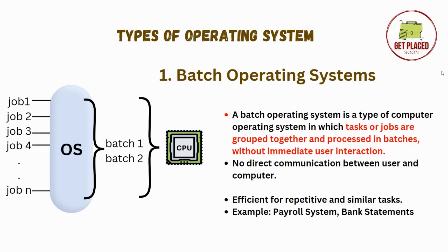In batch operating system, there is no direct communication between user and computer. So this type of operating system is effective for repetitive and similar tasks, because all the similar jobs are grouped and sent into one batch. For example, payroll systems, bank statements, etc.